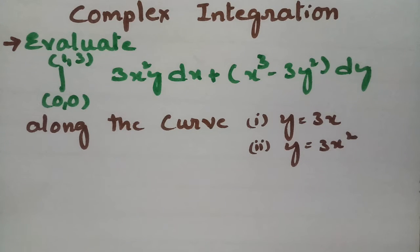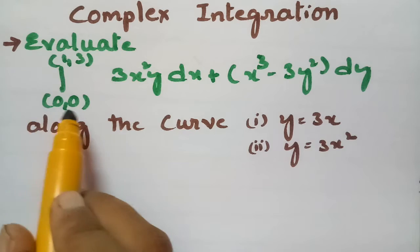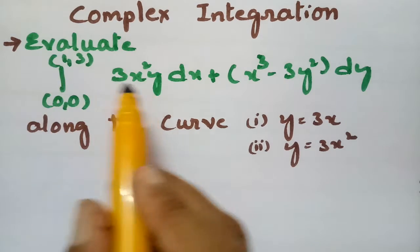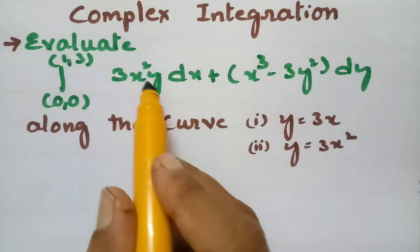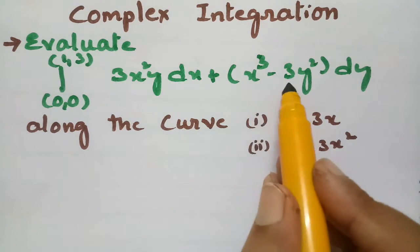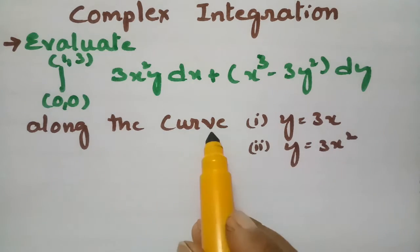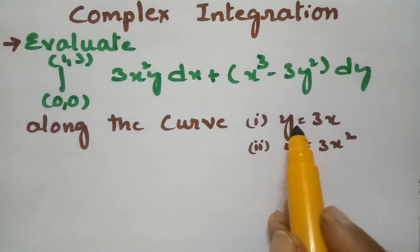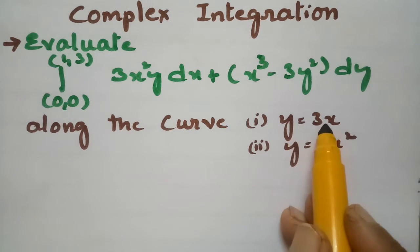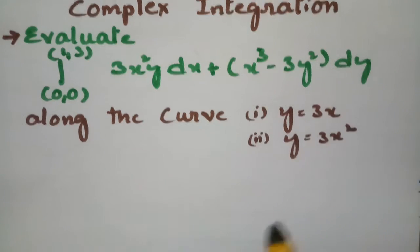In today's video, we are going to evaluate a problem from complex integration. The integral from (0,0) to (1,3) of 3x²y dx plus x³ minus 3y² dy, along two curves: first, y = 3x and second, y = 3x².